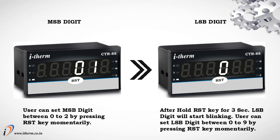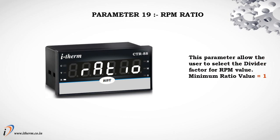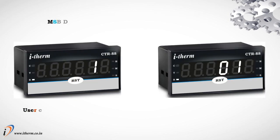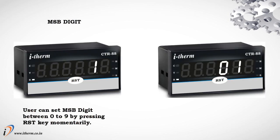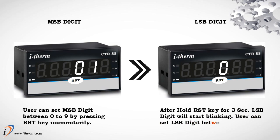Parameter 19: RPM ratio. This parameter allows the user to select the divider factor for the RPM value. Minimum ratio value equals 1; maximum ratio value equals 99. MSP digit: the user can set the MSP digit between 0 to 9 by pressing the reset key momentarily. LSP digit: after holding the reset key for 3 seconds, the LSP digit will start blinking; the user can set the LSP digit between 0 to 9 by pressing the reset key momentarily. This is the last parameter of the configuration list. Press and hold the reset key for 3 seconds to enter run mode.